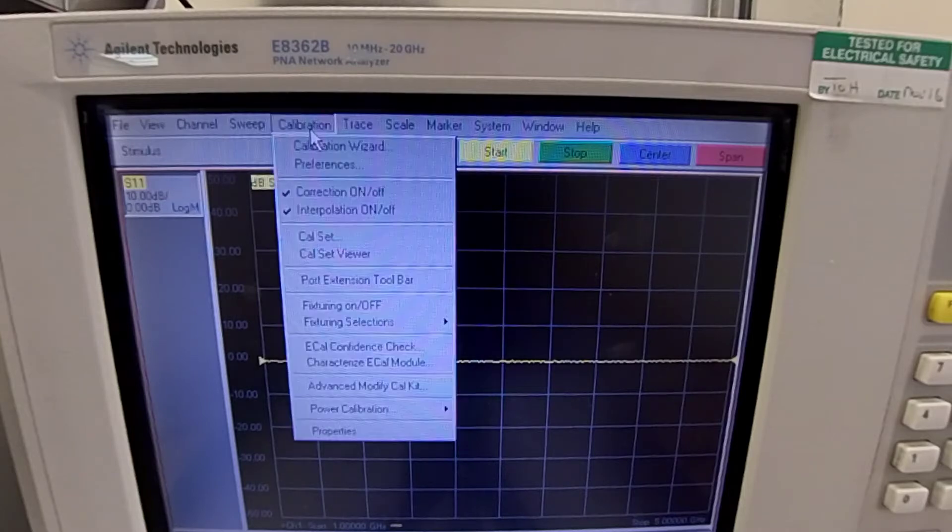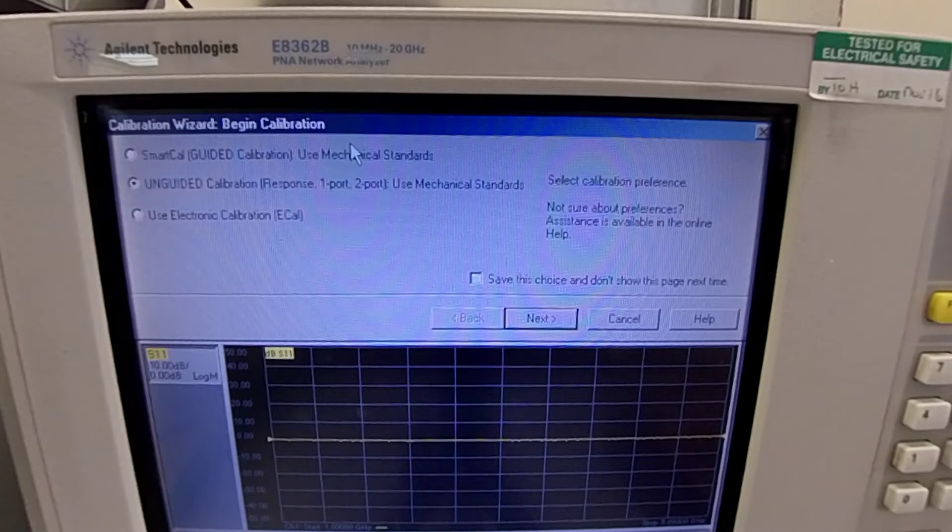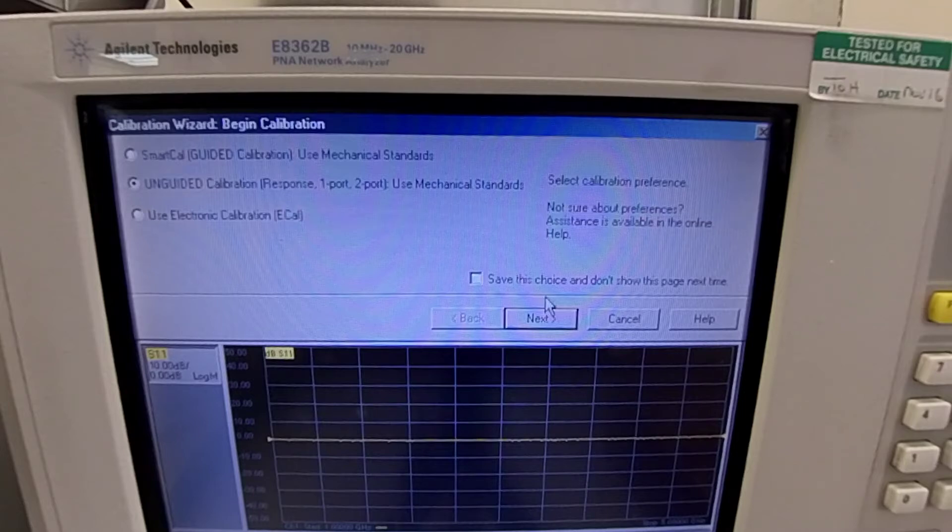Select calibration from the menu and calibration wizard. As you can see there are three options. We will select unguided calibration, use mechanical standard. Click next.